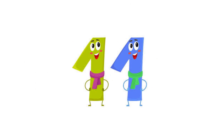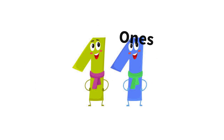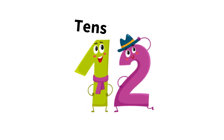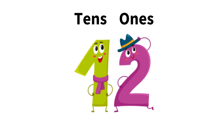You will notice the pattern: the one will remain fixed in the tens place, and the number in the ones place will be changing. After 10 comes 11 — one group of ten and one in the ones place, which is 11. Next we have one group of tens and two in the ones, and that number is 12.